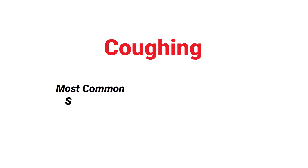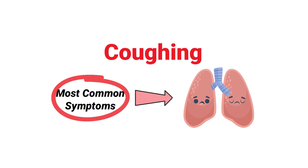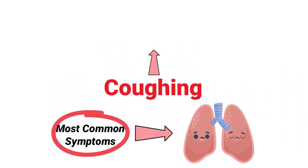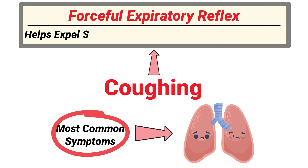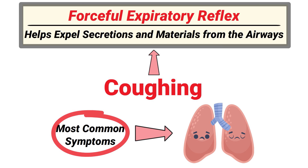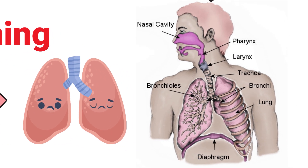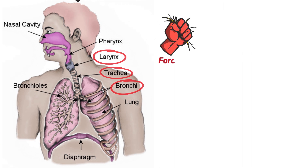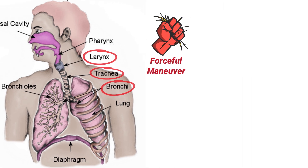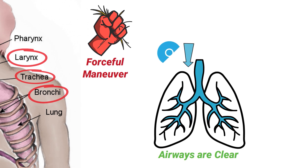Coughing is one of the most common symptoms seen in patients with a respiratory condition. A cough is characterized by a forceful expiratory reflex that helps expel secretions and materials from the airways. This reflex occurs when certain receptors in the larynx, trachea, and bronchi are stimulated, causing your body to automatically perform a forceful maneuver to ensure the airways are clear.